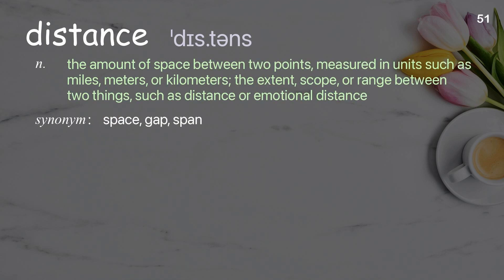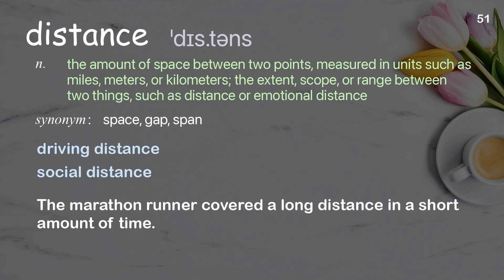Distance: the amount of space between two points, measured in units such as miles, meters, or kilometers; the extent, scope, or range between two things, such as physical or emotional distance. Examples: driving distance, social distance. The marathon runner covered a long distance in a short amount of time.